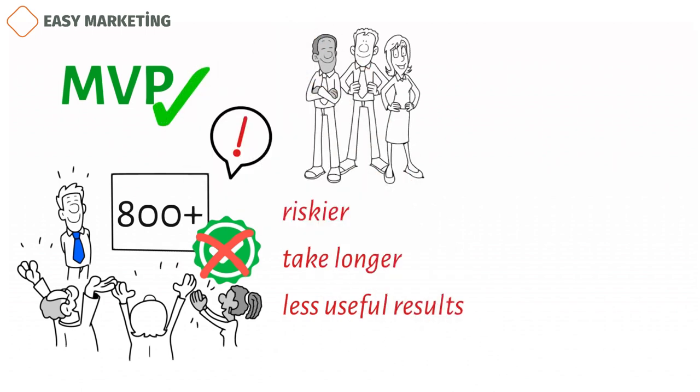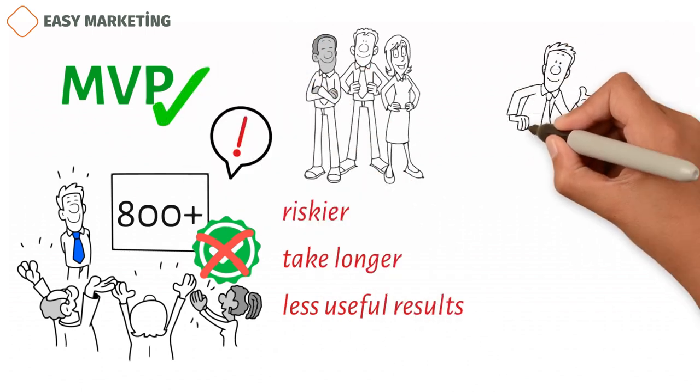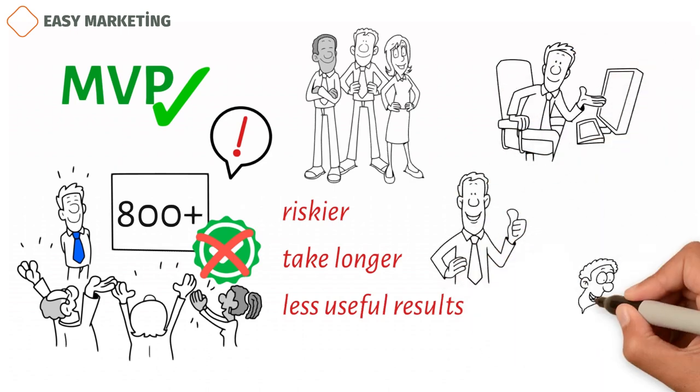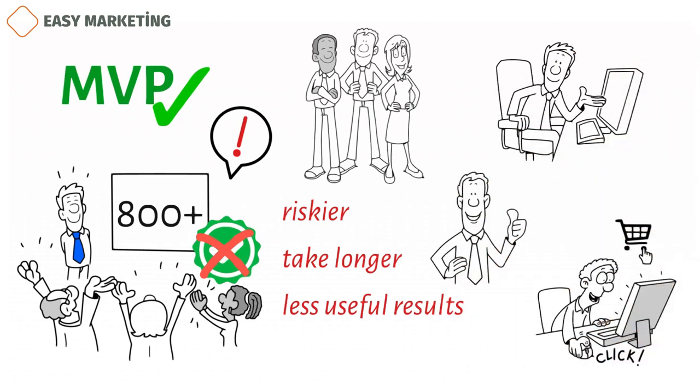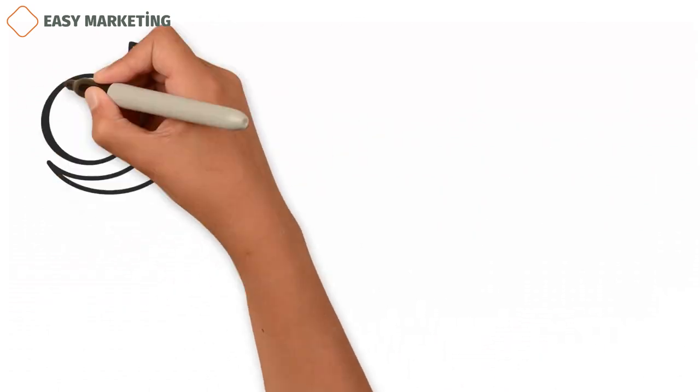The minimum viable product is the right size for your business and your customers. It's big enough to get people to use it, be happy with it, and buy it, but not big enough to be dangerous and bloated. It's the product with the highest return on investment, ROI, divided by the risk.